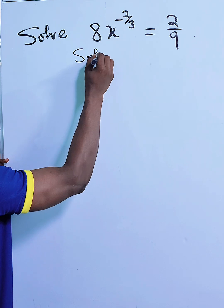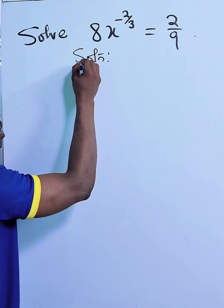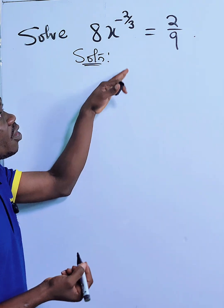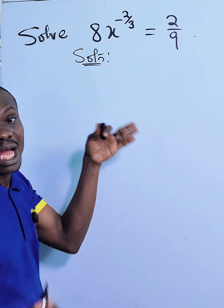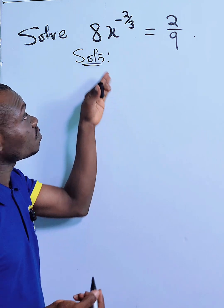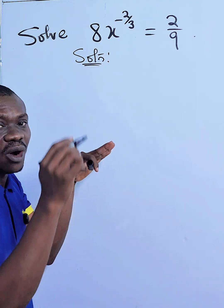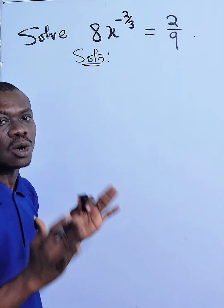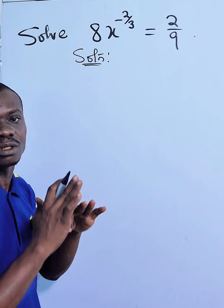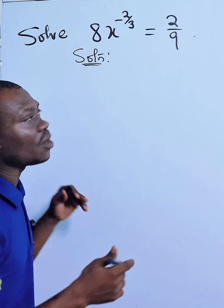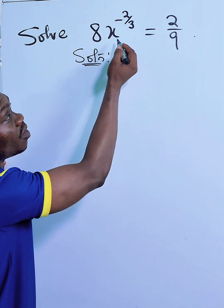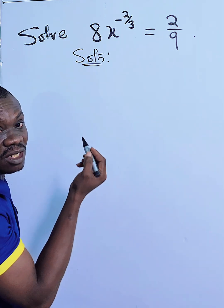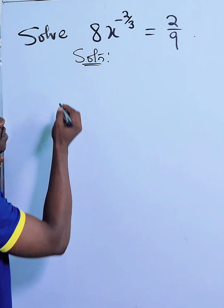So what do we do? When you are looking for X, you try as much as possible to take away every other thing around X — mathematically correct, not anyhow. So here, 8 is multiplying X, so I will need to divide both sides by 8.